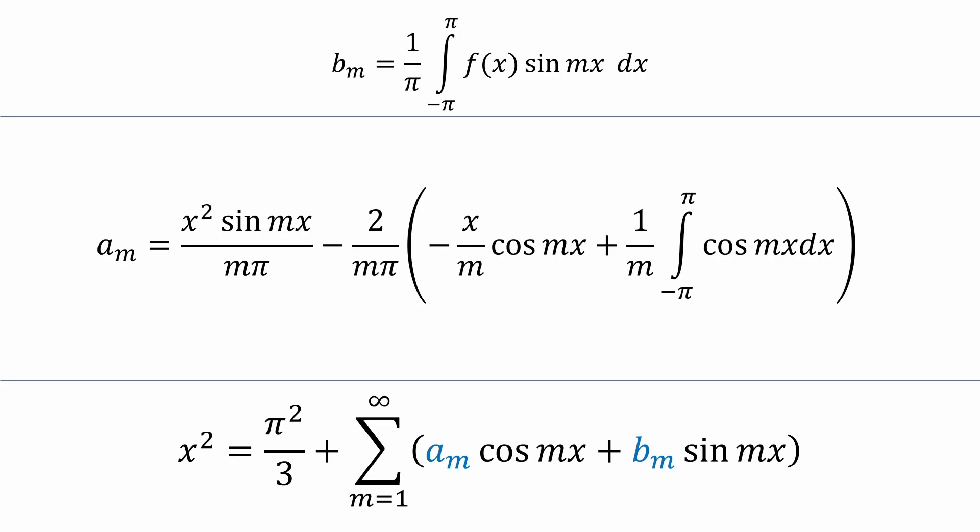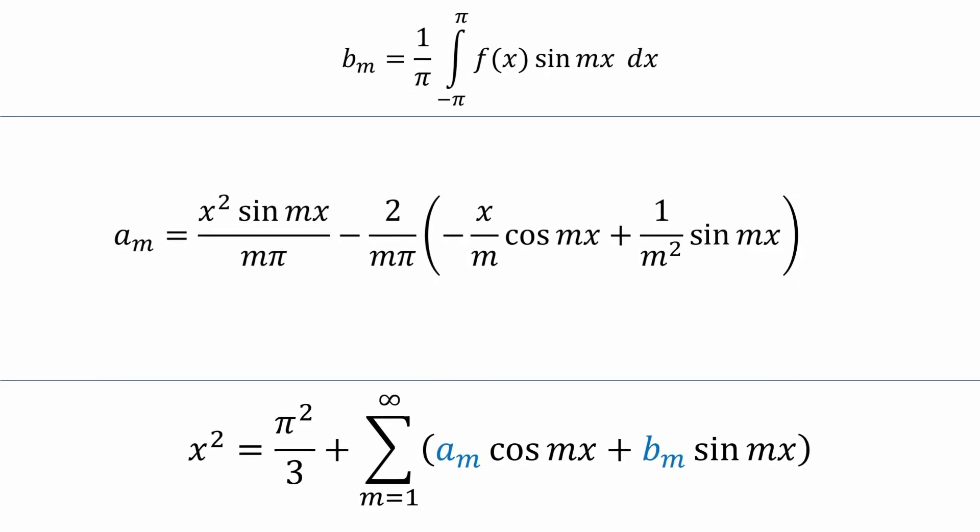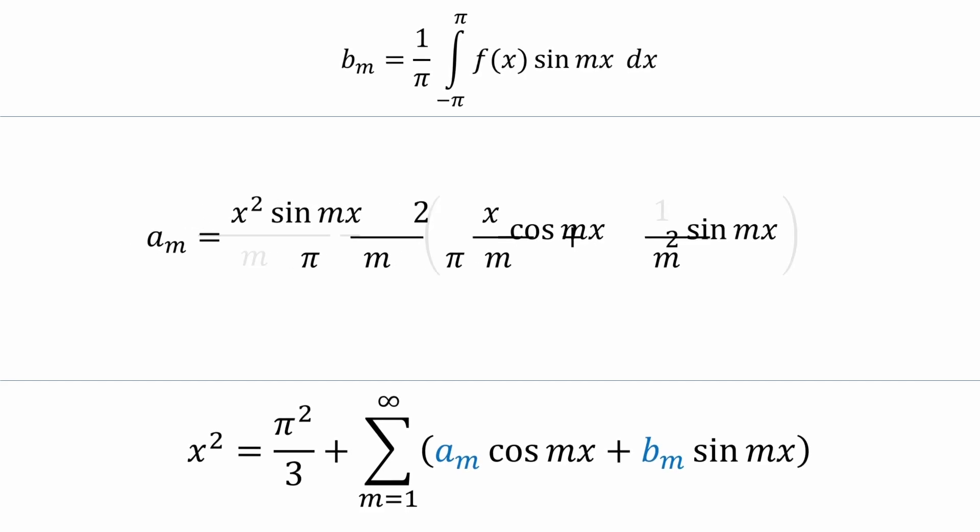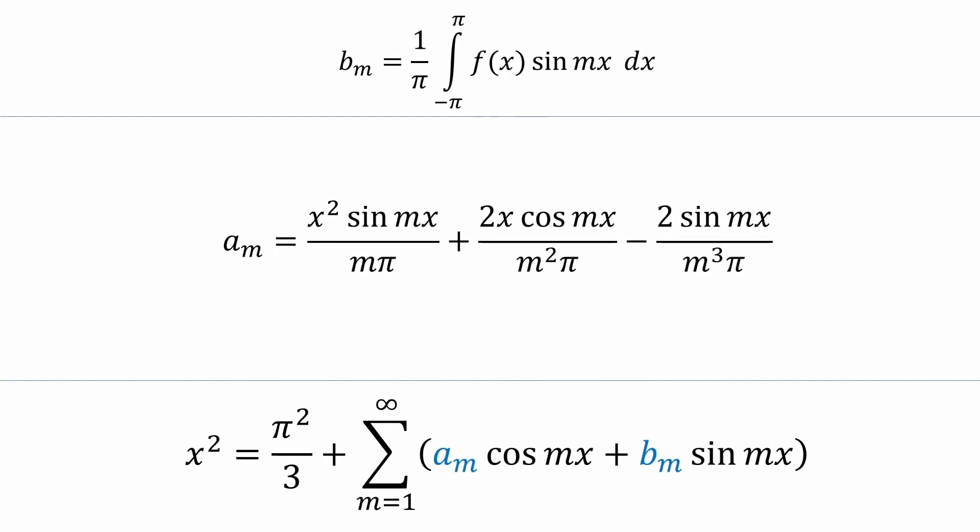Our expression for aₘ has one integral left, but this is an easy one. The integral of cosine mx is just 1 over m times sine mx. And when we simplify, we get this. When we distribute negative 2 over mπ, we'll get the following expression. Good news! No need to simplify any further.